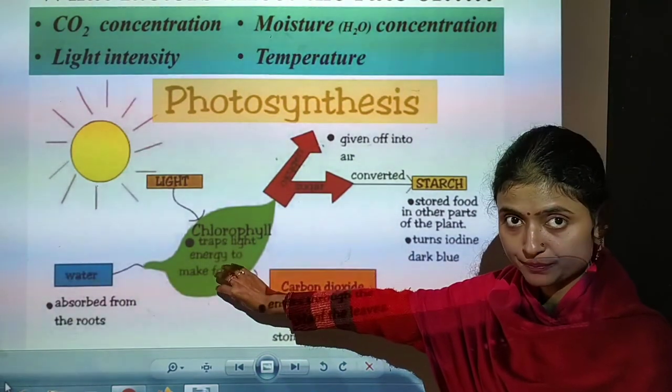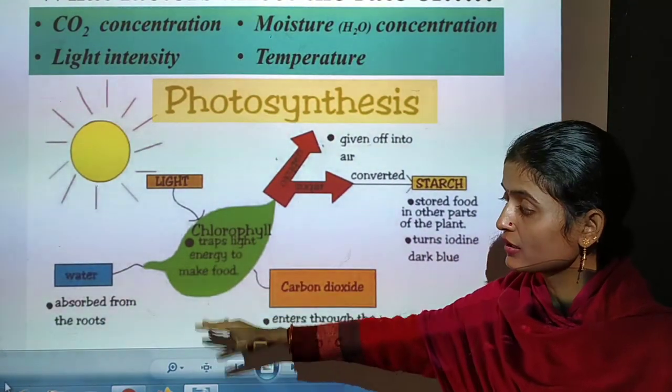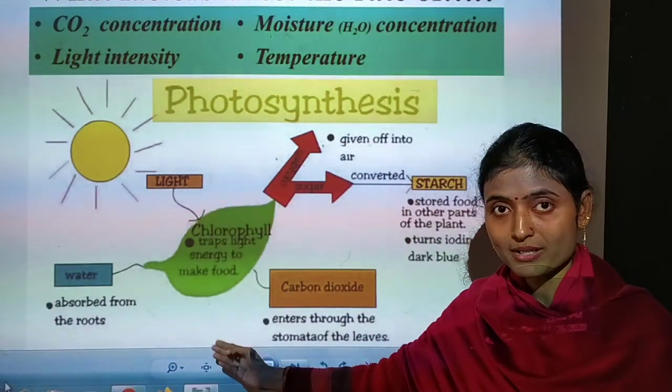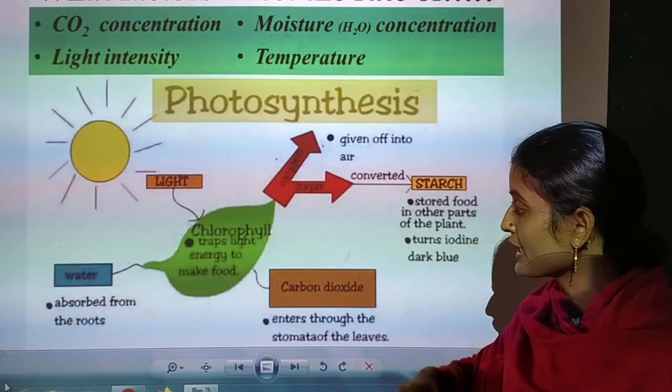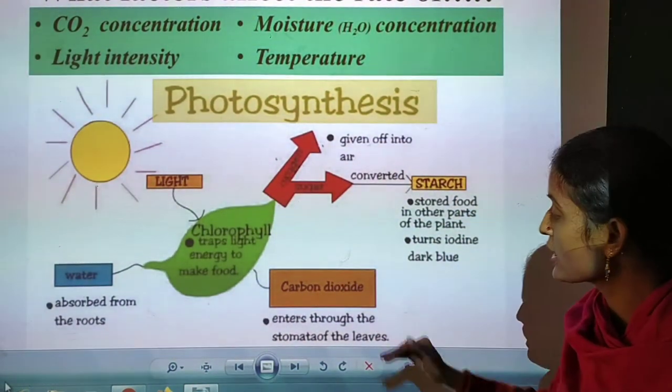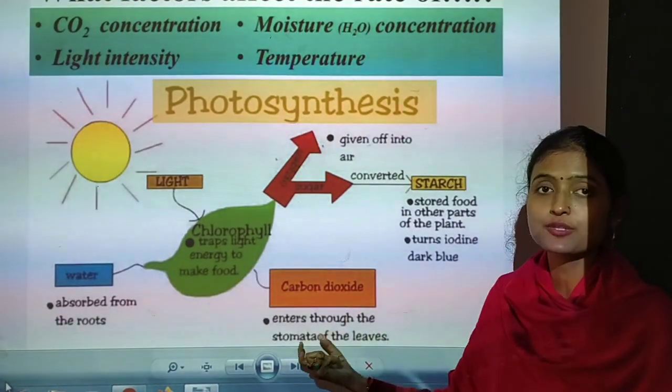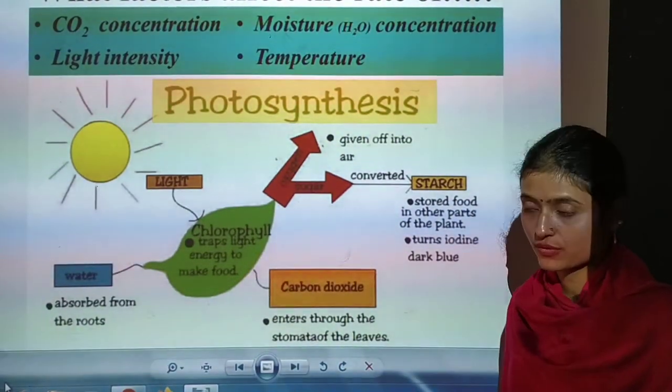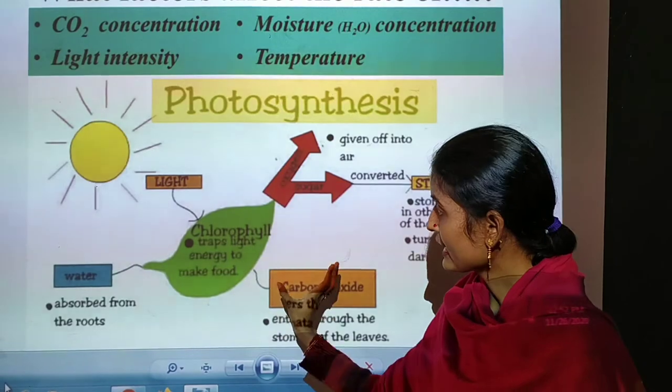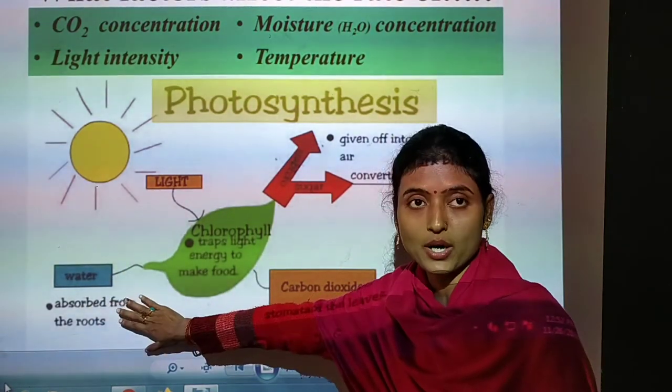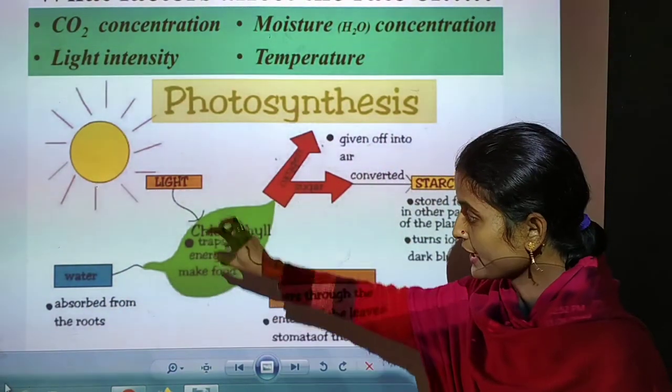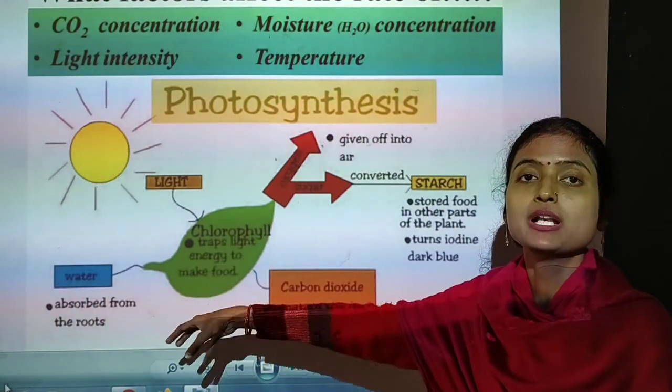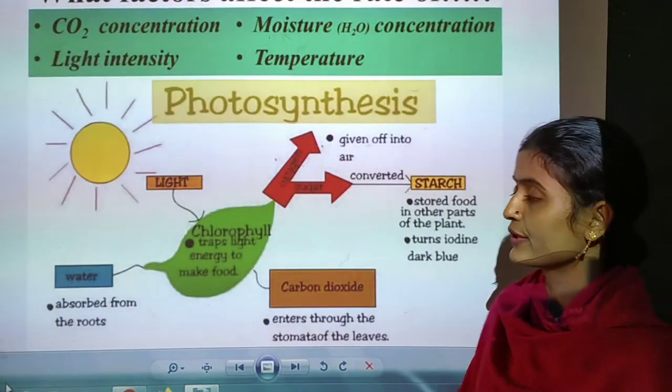So, from where will the plant get water? From the roots. Water is absorbed from the roots, and carbon dioxide enters through the stomata of the leaves. So, after that, carbon dioxide and water - and I believe chlorophyll pigment is there, a green color pigment named chlorophyll.